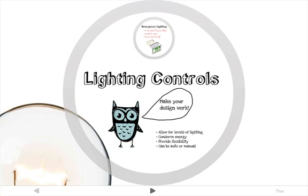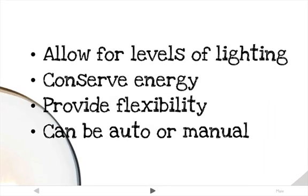Good lighting controls give both flexibility and economy to a project. They allow for a variety of lighting levels and patterns. Lighting controls include both automatic and manual operations. Occupancy sensors, which are great for commercial spaces, help conserve energy. It's really important to talk to the people who use the space and discover how the space should be used before deciding on a lighting plan. Manual lighting plans generally give employees a sense of control, leading to satisfaction and increased productivity. But too many options can be a bad thing — simplicity is pretty important.